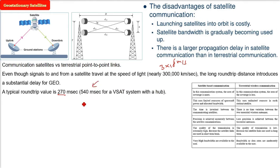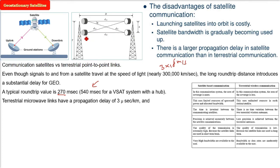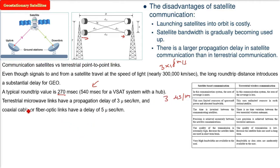Terrestrial microwave links have a propagation delay of 3 microseconds per kilometer. For coaxial cable and fiber optic links, the delay is 5 microseconds per kilometer. You can see the difference — micro is smaller, but the delay is higher in geostationary satellites.